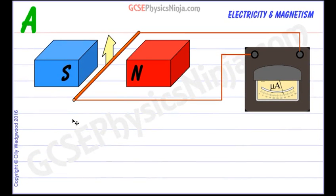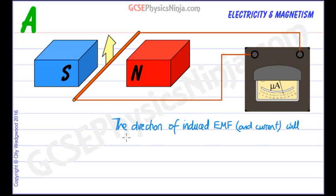The first thing that we must write down to start off with though is that the direction of induced EMF and current, if there's a circuit, will always oppose the change causing it.